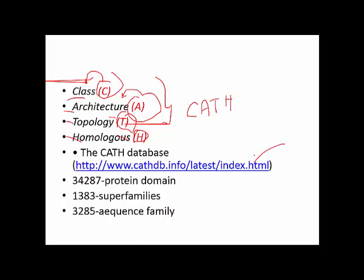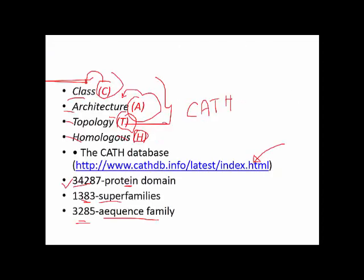The CATH database has its own website. According to reference books, there are 34,287 protein domains submitted in CATH, 1,383 superfamilies of protein, and 3,285 sequence families of protein. That is a large amount of data available with CATH — and if you see the recent data it will be even more. Before learning this database further, let's understand what is meant by protein families.